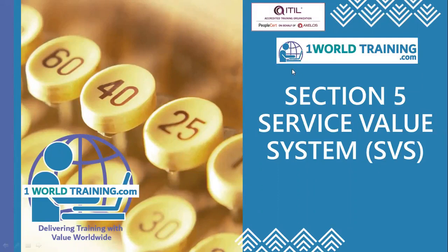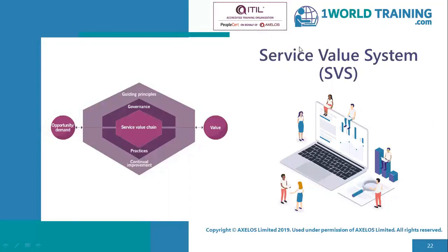Welcome to section 5 of ITIL Foundation training: the service value system. This is the picture of the service value system. In this, we see five components mainly. We see the guiding principles at the top, which has been covered in a previous section, along with governance. We will move on to other components like the service value chain, practices, and continual improvement, which is an approach to continual improvement.